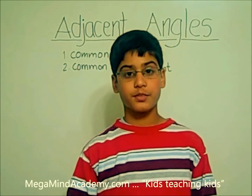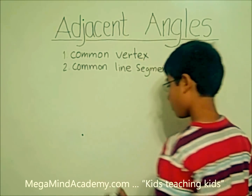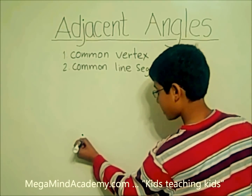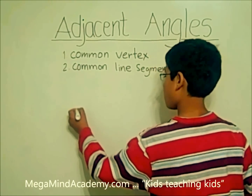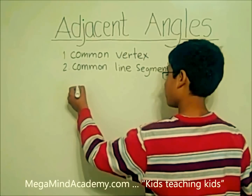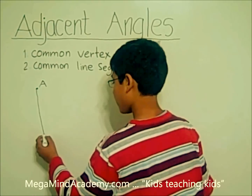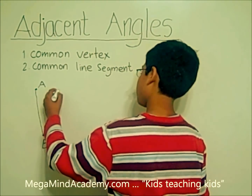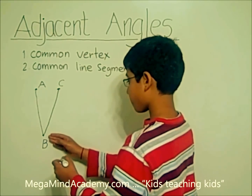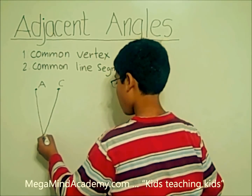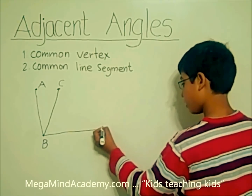Let's look at some examples. Let's say this is a vertex. Let's name it vertex B. Let's make a line segment and name it line segment AB. Let's make another line segment and name this one line segment CB. Let's make another line segment and name this one line segment DB.